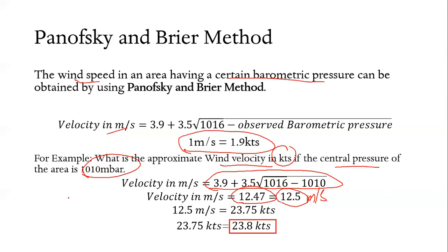Convert it into knots. How? 12.5 times 1.9, it will be 23.75 knots.